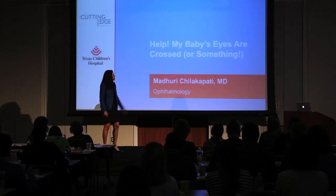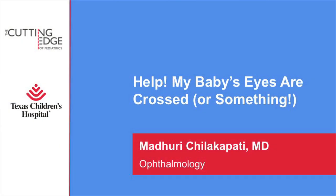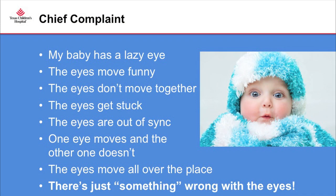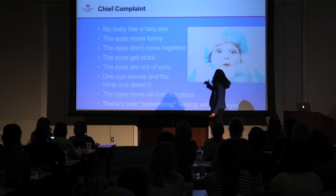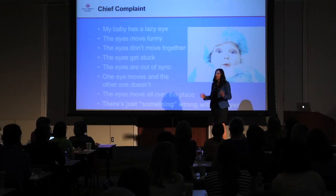The title of my talk today is 'Help, My Baby's Eyes Are Crossed — Or Something.' The 'or something' refers to the myriad of ways that parents express their concerns about their baby's eye alignment or eye movement. We hear all sorts of chief complaints: my baby has a lazy eye, the eyes are moving funny, the eyes don't move together, the eyes get stuck, they're out of sync, one eye moves and the other doesn't, or my favorite — there's just something wrong with the eyes. And a lot of times when I'm looking at the baby in the office, they look perfectly aligned.